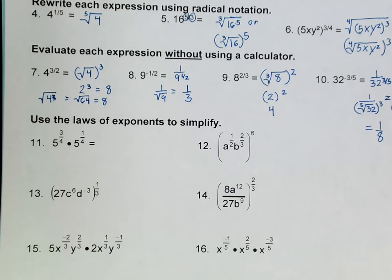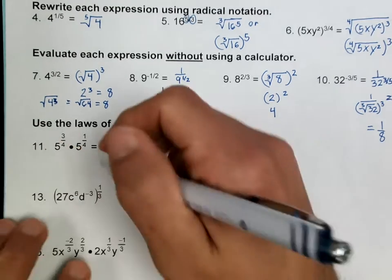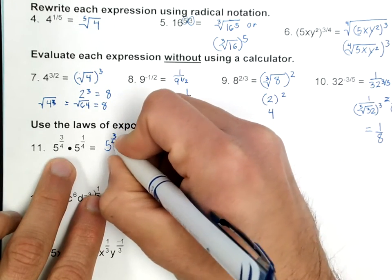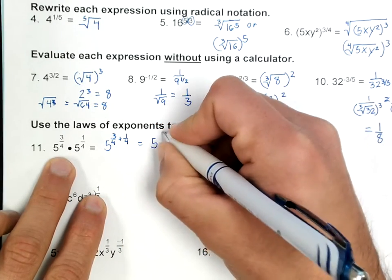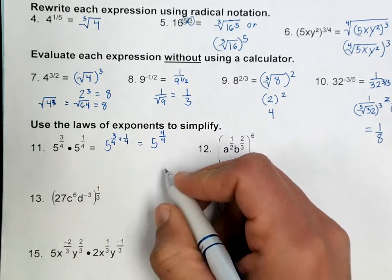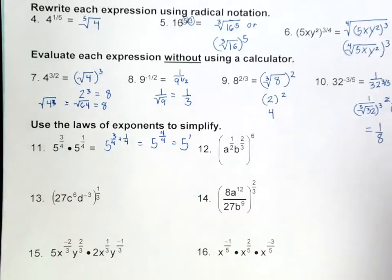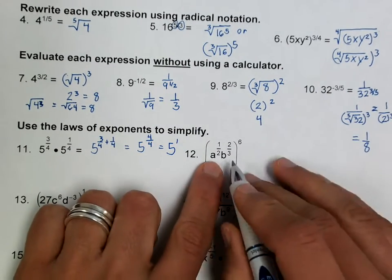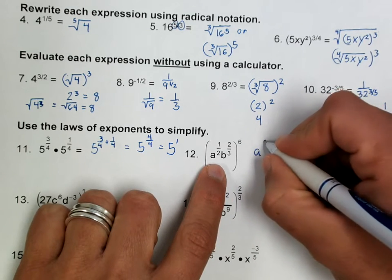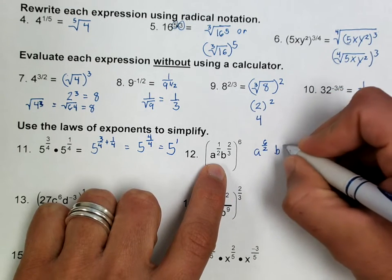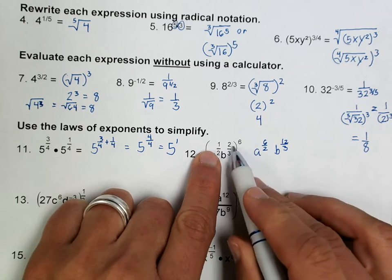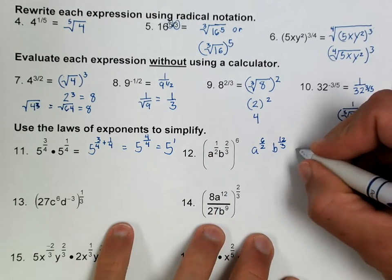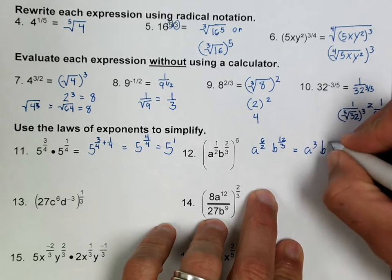Alright, so now we're going to use the laws of exponents, which we learned in the last video, but the only difference now is that we have fractions. I'm going to go through this pretty fast. Remember, if you multiply, you add. So you have 5 — if you remember how to add fractions, you're just adding the numerators, which is 4, and keep the denominator the same. So this is just 5 to the first power, which is just 5. On number 12, if we have a power raised to a power, we're going to multiply. So this is 6 over 2, and this is B 12 over 3. Please notice that I'm just multiplying that number times the numerator, and then reducing. So this is A cubed B to the fourth.